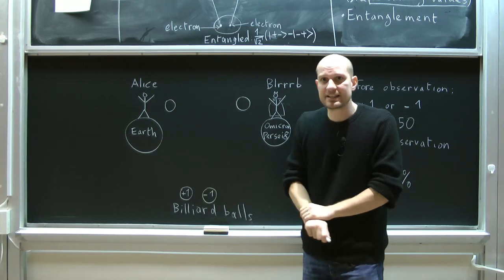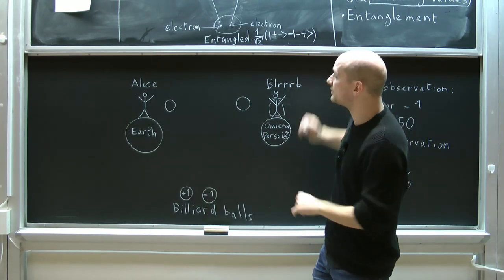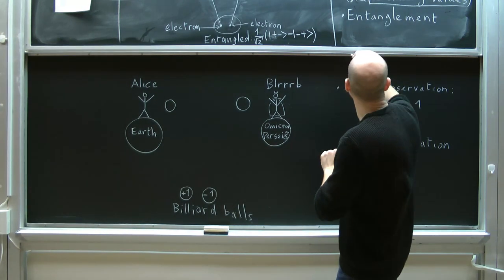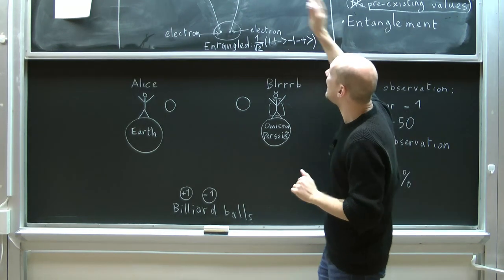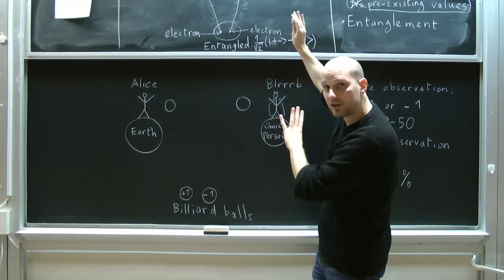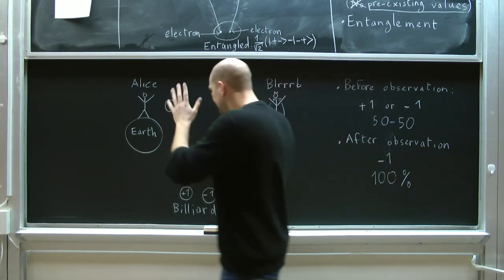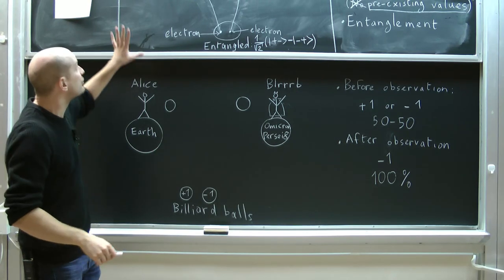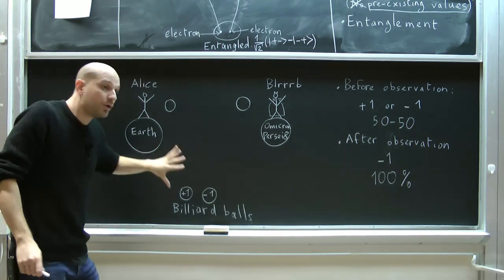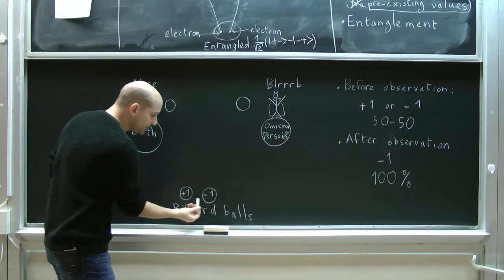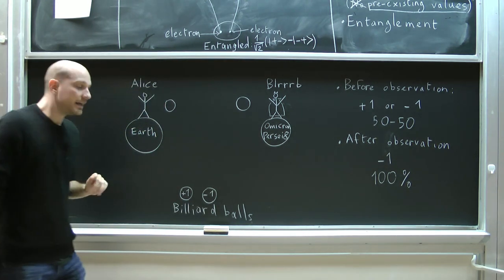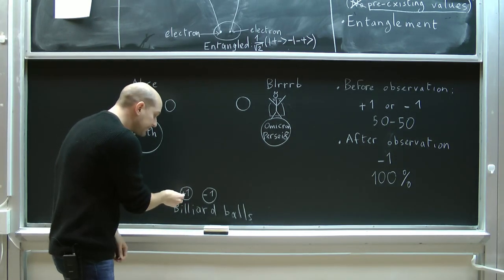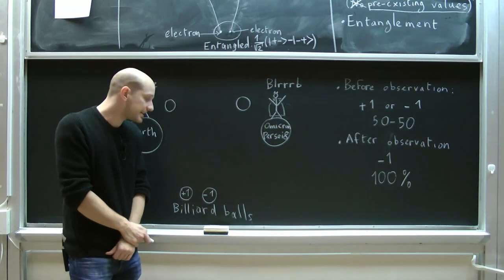In order to discuss why this solves the locality problem, let me give up a little bit on the quantum world and discuss a similar situation in the classical world — and see how pre-existing values can allow something that looks like a non-local effect, and yet there is no non-local effect. So let's replace our quantum electrons with classical particles, in this case two billiard balls. These billiard balls have markings on them: one has a marking that says plus one and the other says minus one.